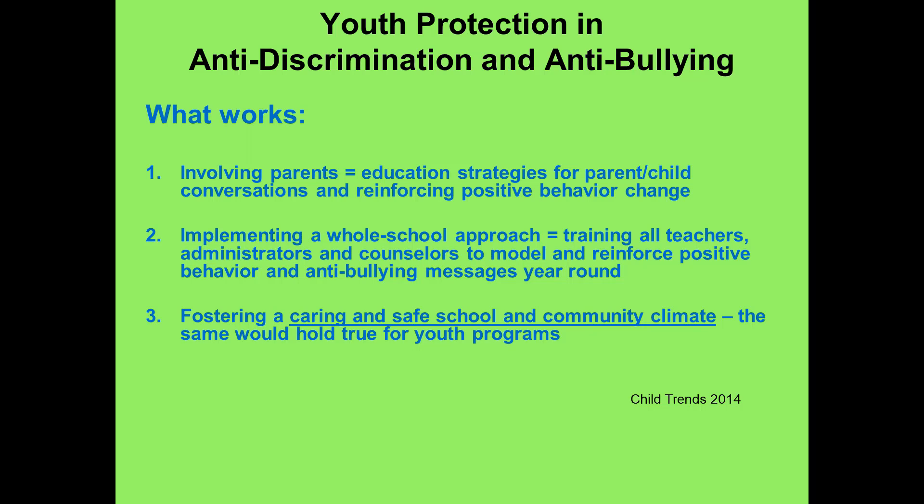So what works when we talk about bullying? There are effective measures that address bullying, and it requires multiple levels of commitment and active involvement — parents, a whole-school approach, and the community. Many times parents are unaware that bullying occurs, so providing educational strategies that allow for parent-child conversations in which parents can reinforce positive behavior is important. The whole-school approach involves training teachers and administrators to model and reinforce positive behavior and provide anti-bullying messages. The same holds true for after-school programs, which should provide a caring and safe environment that is very adamant about stopping bullying.